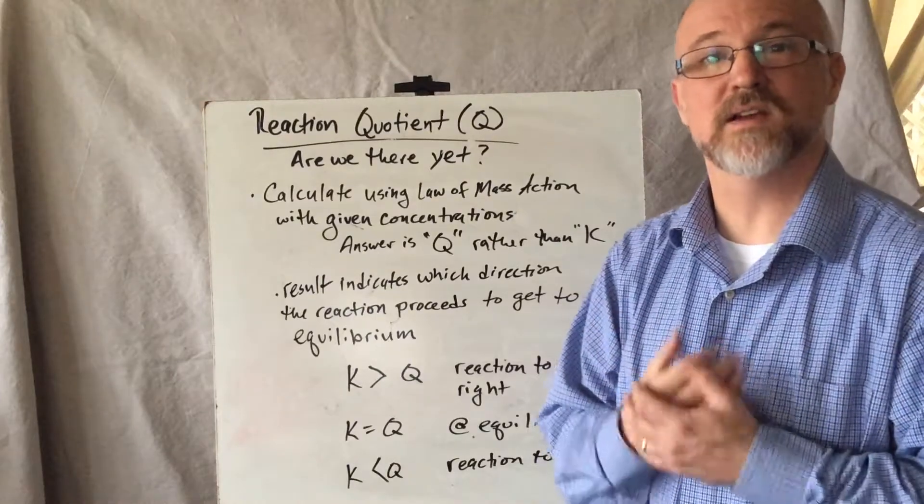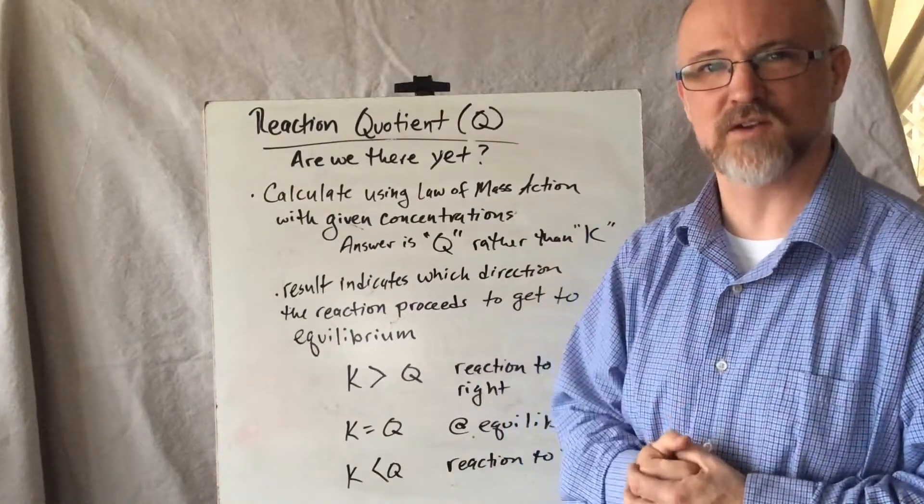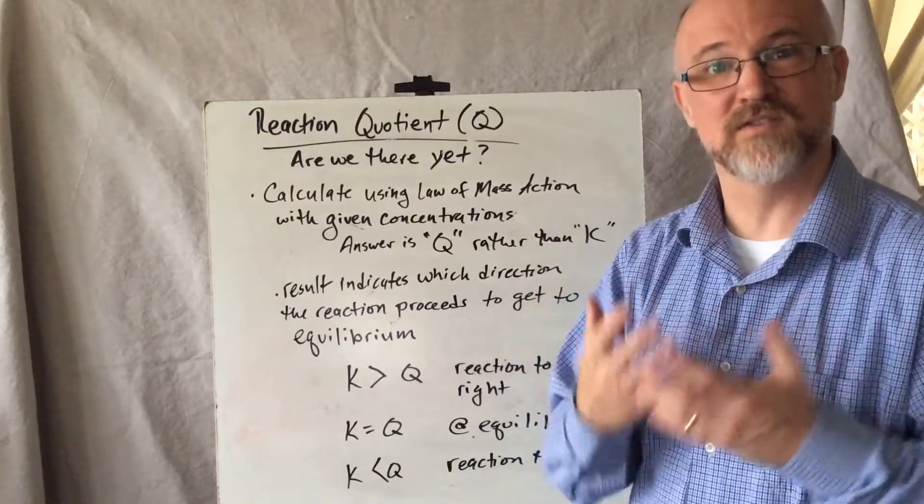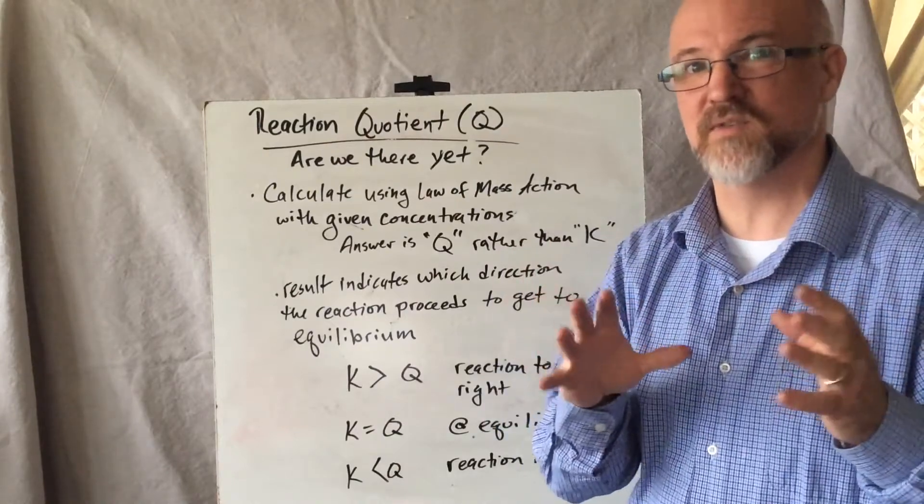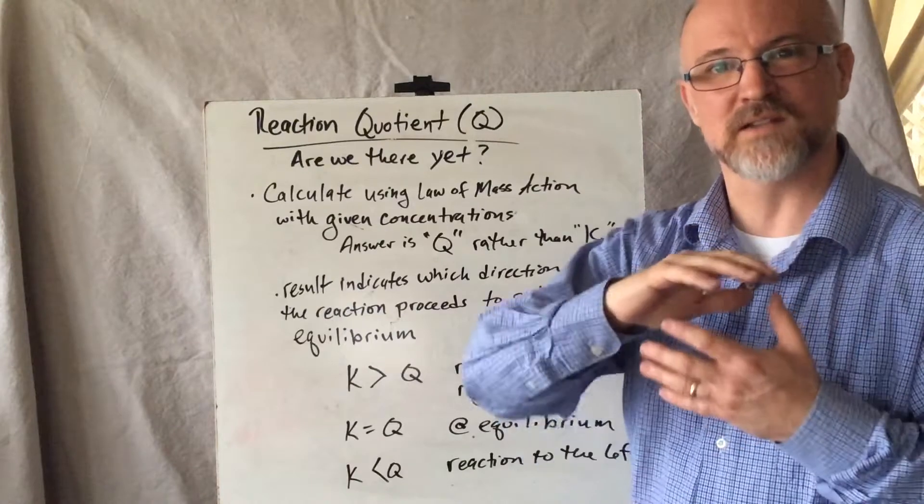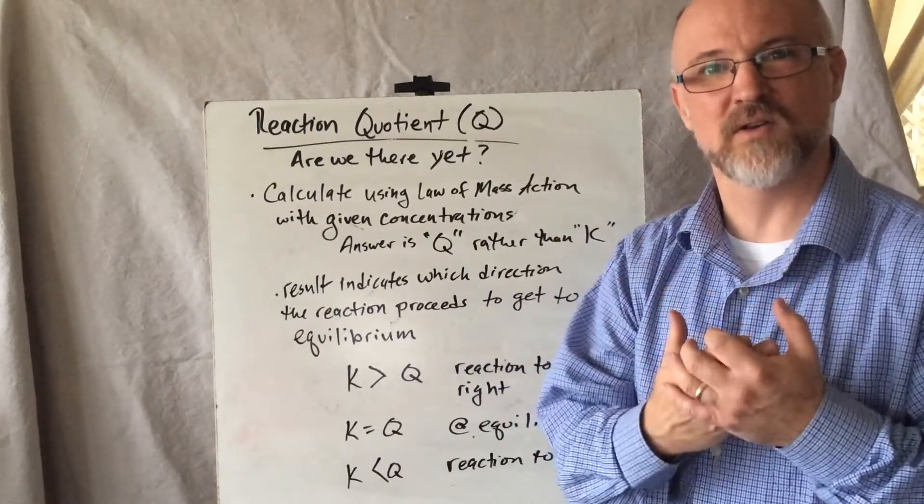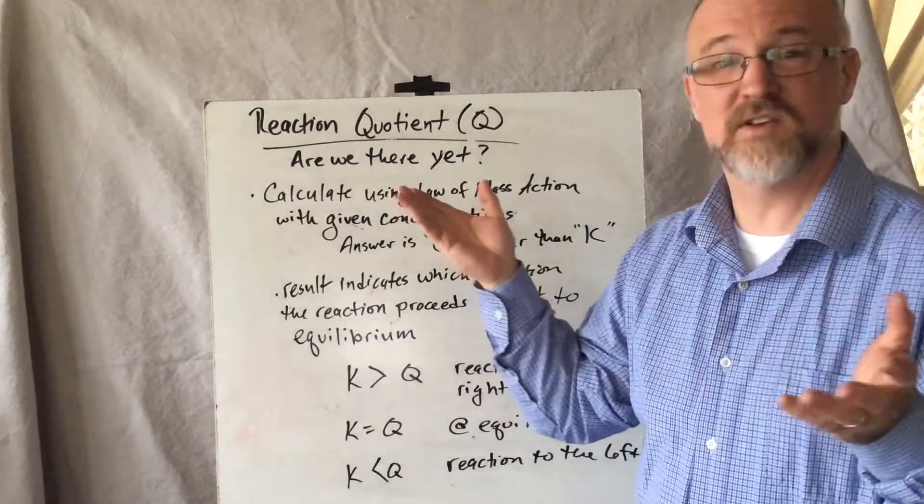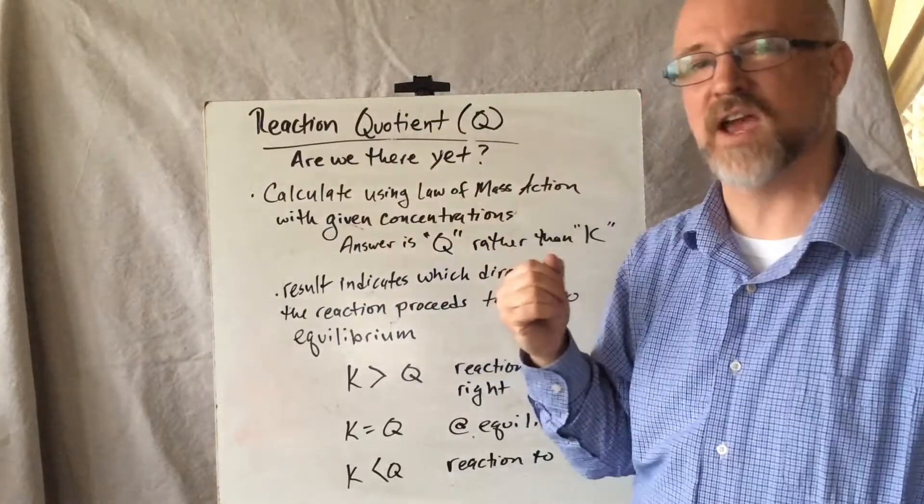So we can now talk about looking at a scenario where we have a given set of concentrations for a reaction. And the question that we could then answer is, doing the same kind of calculation we've talked about with determining what the equilibrium constant is, what the K value is, we could now talk about or answer the question, given a different set of concentrations, if we know what the K value is, are we there yet?